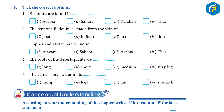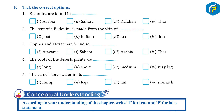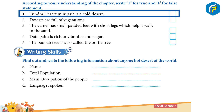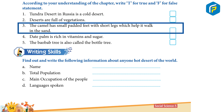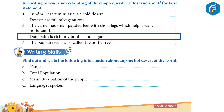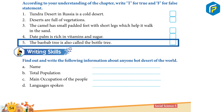Conceptual Understanding: According to your understanding of the chapter, write T for true or F for false. 1. Tundra Desert in Russia is a cold desert. 2. Deserts are full of vegetation. 3. The camel has small, padded feet with long legs which help it walk in the sand. 4. Date palm is rich in vitamins and sugars. 5. The baobab tree is also called the bottle tree.